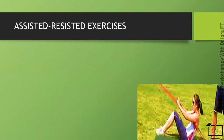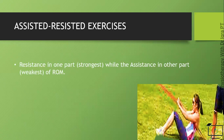In assisted-resisted exercises, sometimes muscles are strong enough to work against resistance in one part of the range but weak in the other part. In this type of movement, the external force is applied to resist in the strongest part and to provide assistance in the weak part of the range of motion. As in this picture, the resistance is provided by the band in the hand, and assistance is provided with the band around the back.